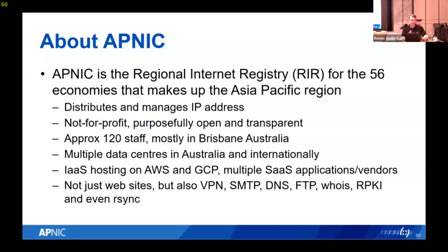Just an overview: APNIC is the regional internet registry for the Asia-Pacific region, covering 56 economies. Our main operation is distributing and managing IP addresses. We are a not-for-profit organization, purposefully open and transparent. We have approximately 120 staff in Australia, multiple data centers in Australia and internationally, and we use IaaS hosting on AWS and GCP, with a little on Azure, plus multiple SaaS applications and vendors.